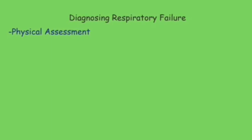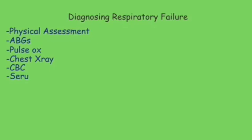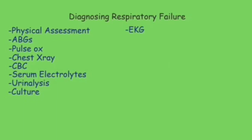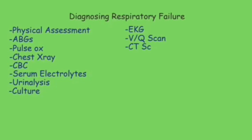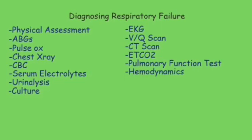Diagnostic tools for respiratory failure include physical assessment — important for catching early signs before ABG changes — and ABGs to determine oxygenation and ventilation status. Pulse oximetry measures oxygenation. Chest x-ray, CBC, serum electrolytes, urinalysis, and cultures help identify cause and consequences. EKG monitors the heart. VQ scan and CT scan rule out pulmonary embolism. End-tidal CO2 assesses lung ventilation. Pulmonary function tests are an option but not routine. Hemodynamic monitoring includes CVP for tissue perfusion status, PAP for lung-origin fluid, and PAWP for heart-origin fluid.